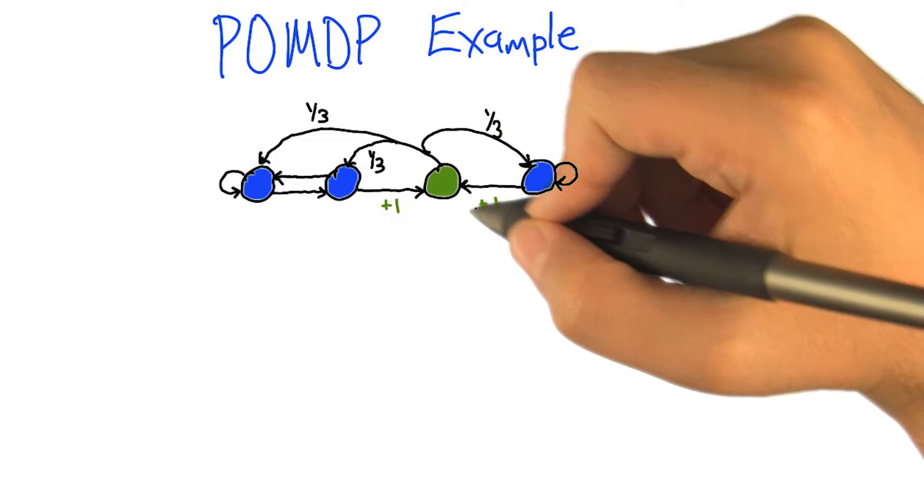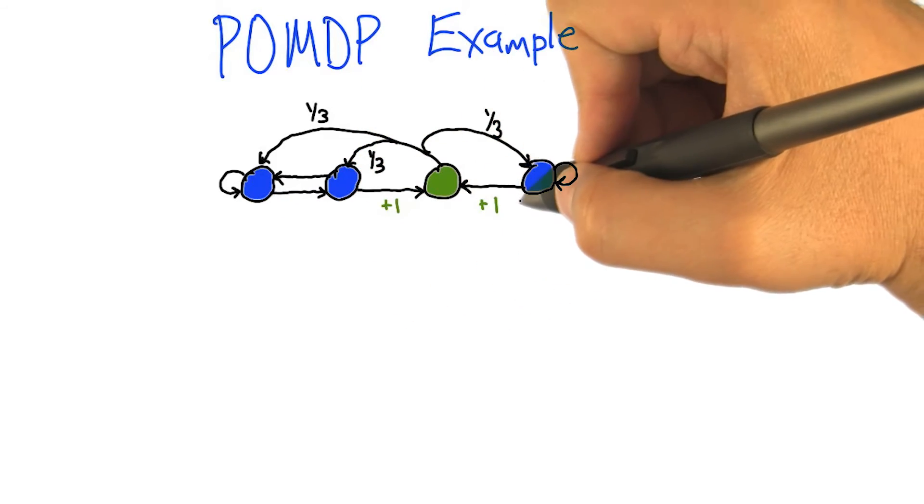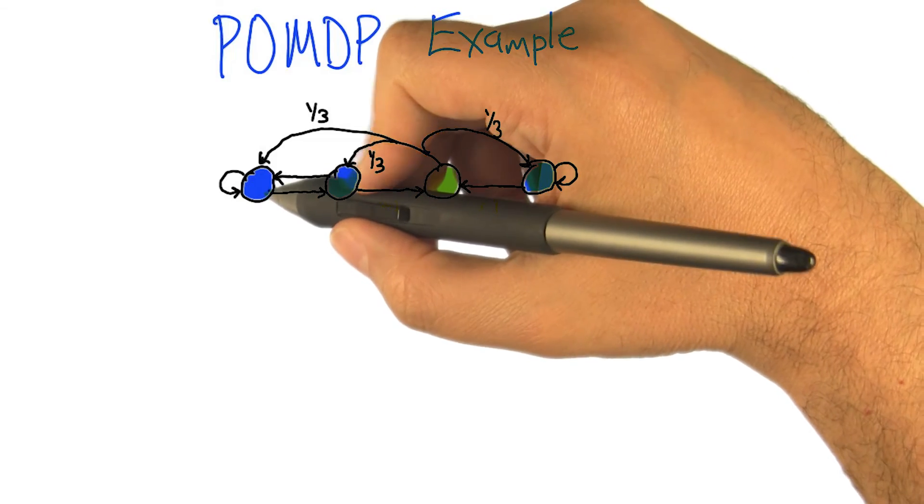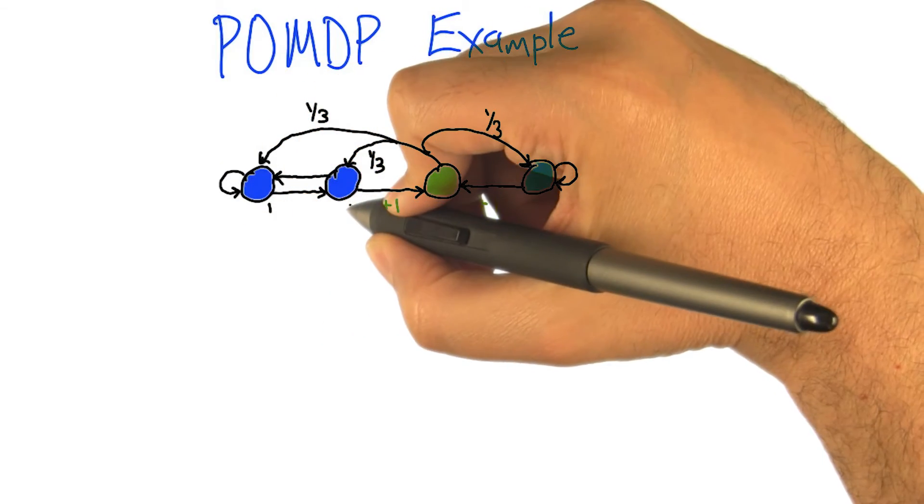Good. So that was the thing I guess I neglected to point out. I'm showing the observations in this diagram with the colors. So let me just number the states just for ease of referring to them.